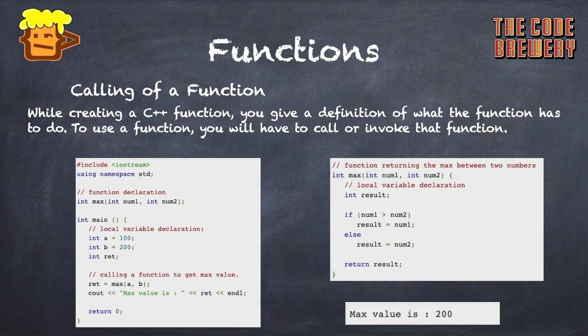From the example we can see that inside the int main, first we have declared it outside all the functions in the starting int max, and in the main function we call it using max comma a comma b, and then we define the function. Hence calling of function happens.